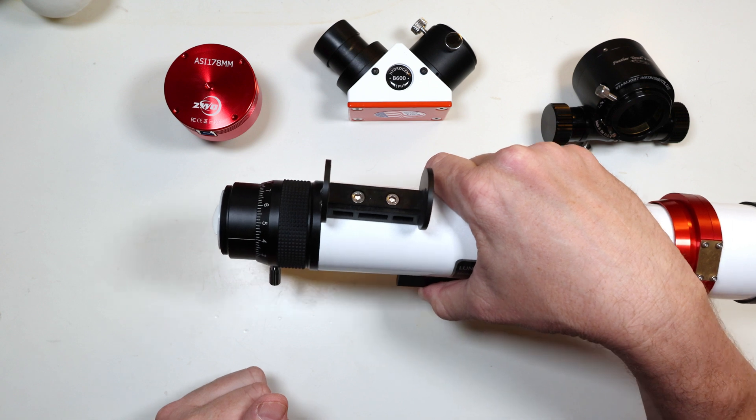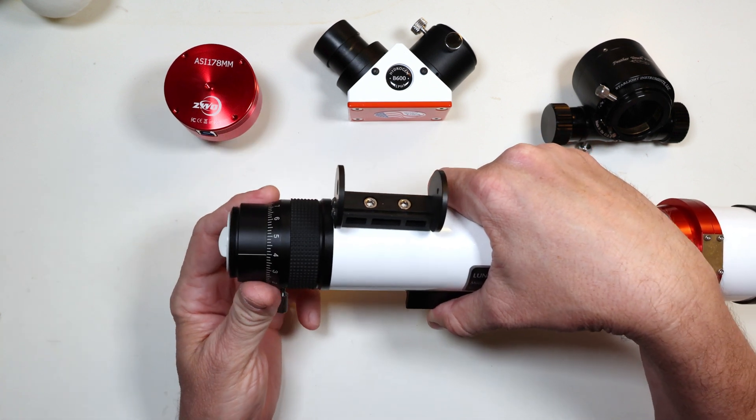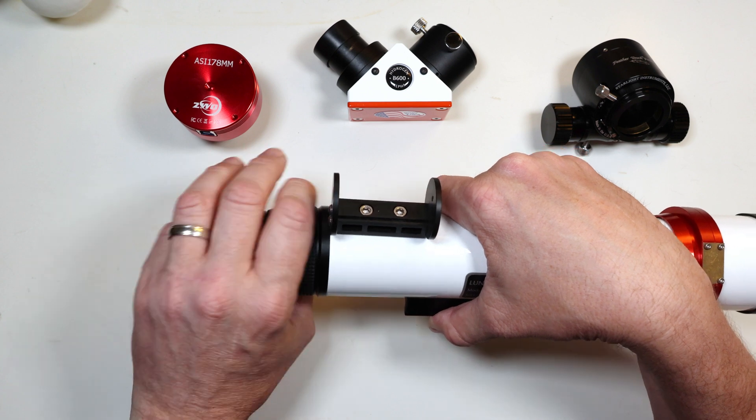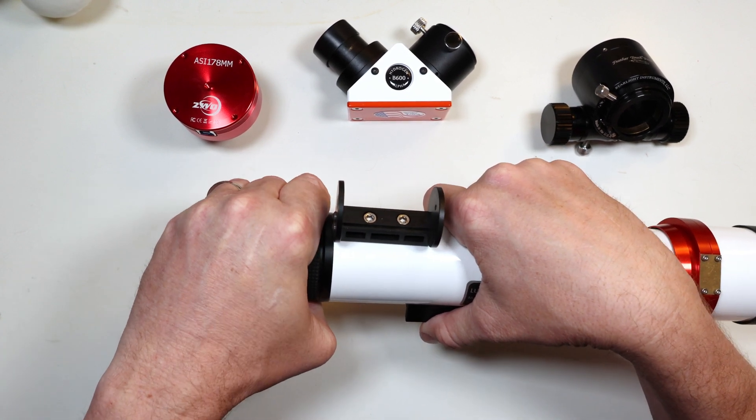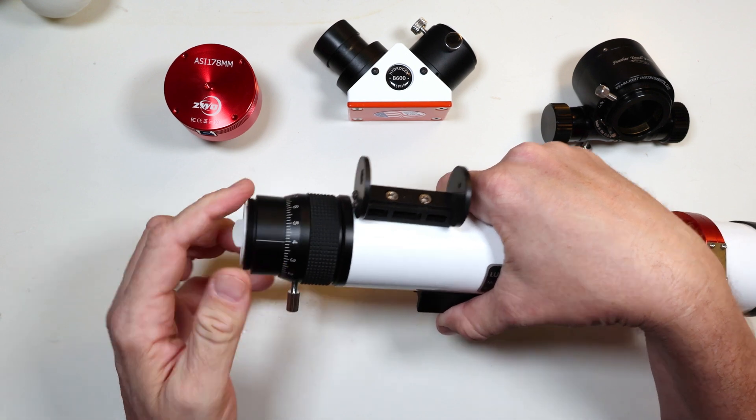Next, while holding firmly onto your telescope with a firm grip on this non-rotating helical focuser, you're going to turn it counterclockwise. It can be a little tight, but eventually it will come off.